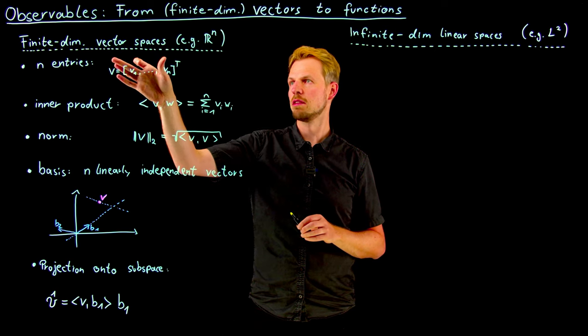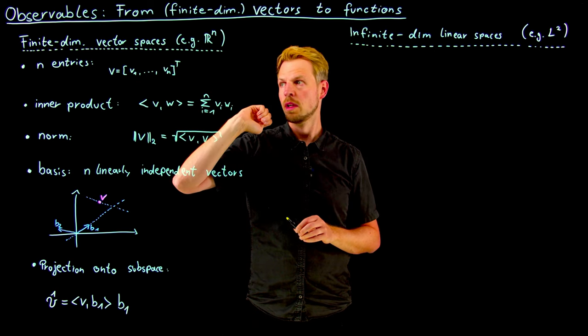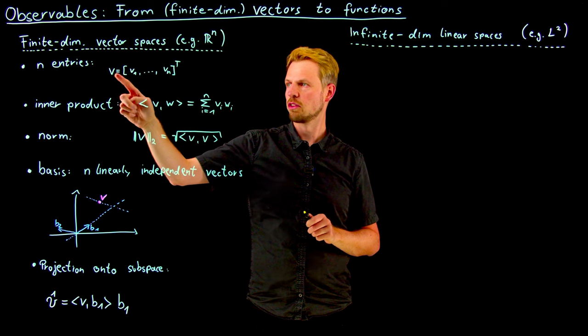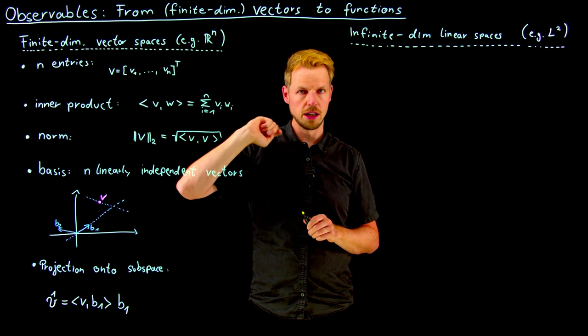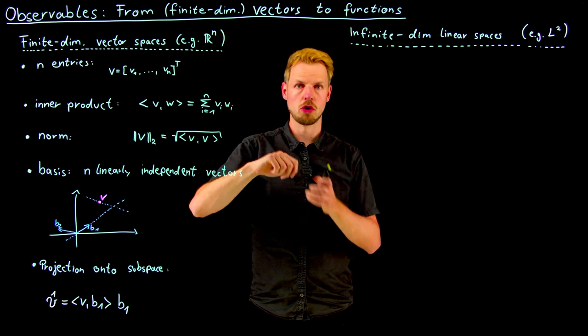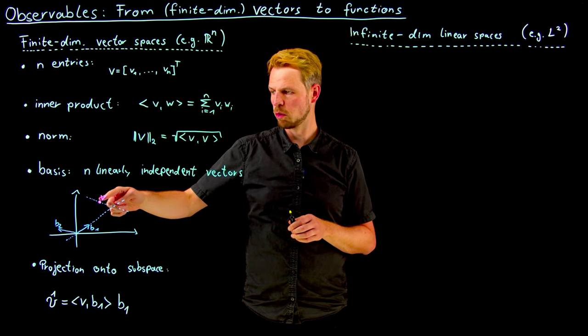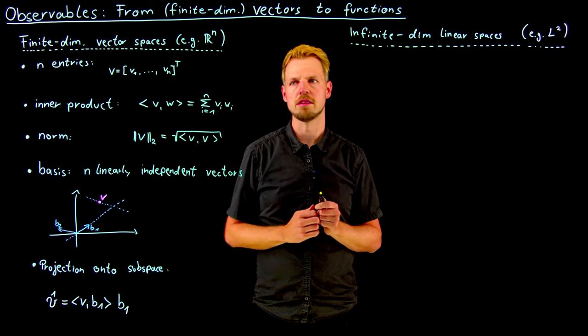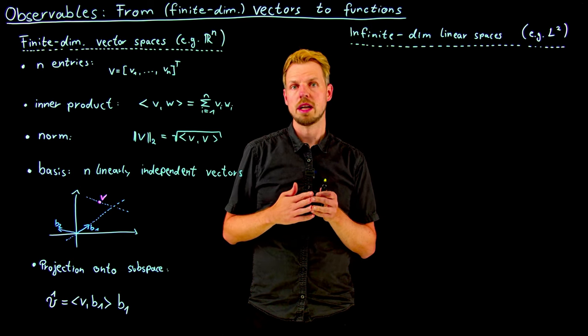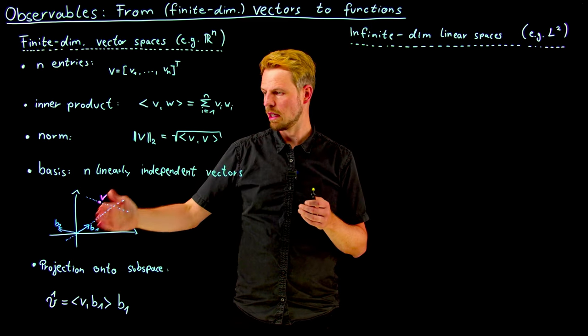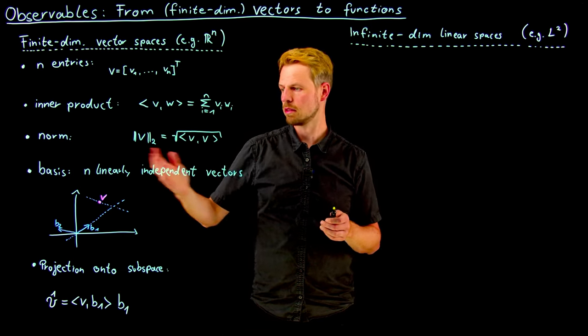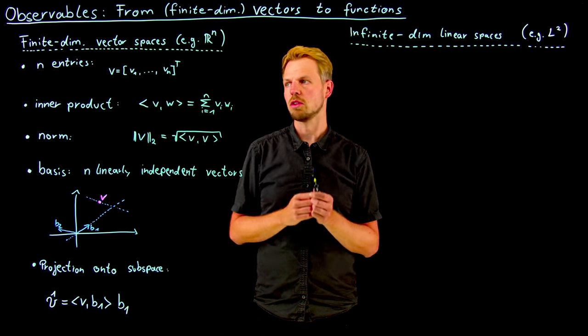Let's start in the finite dimensional space. We have a vector space R^n, which means every element of the space is a vector that has n entries - n real numbers that determine the value of the vector or the point in space where we place it.